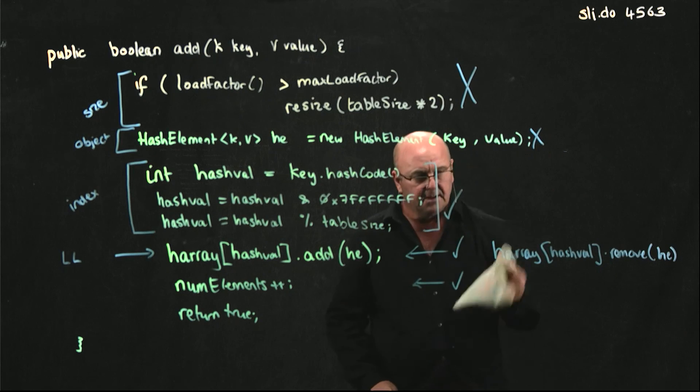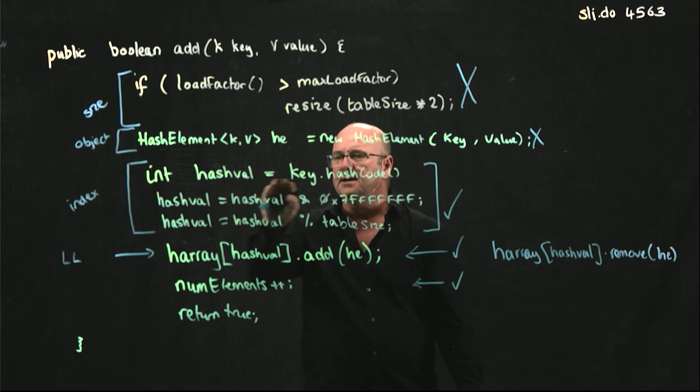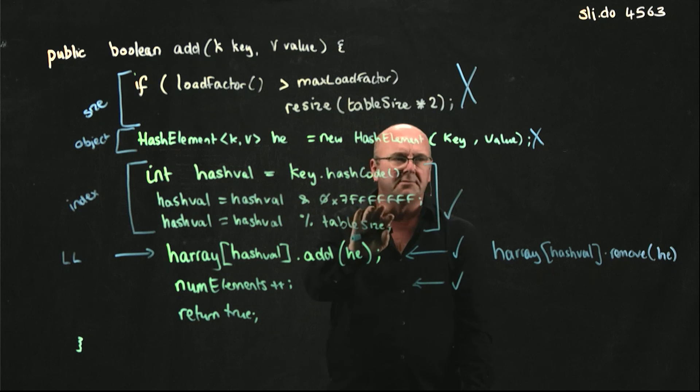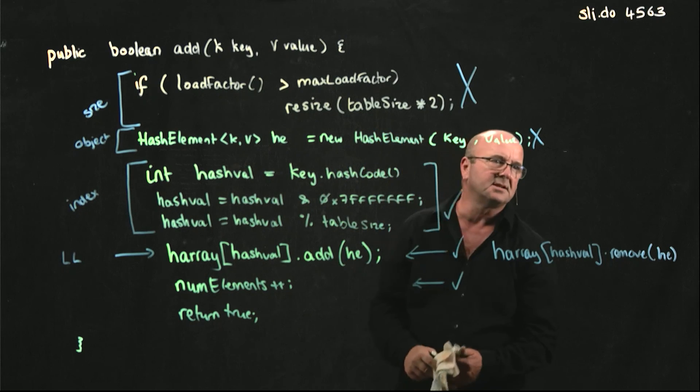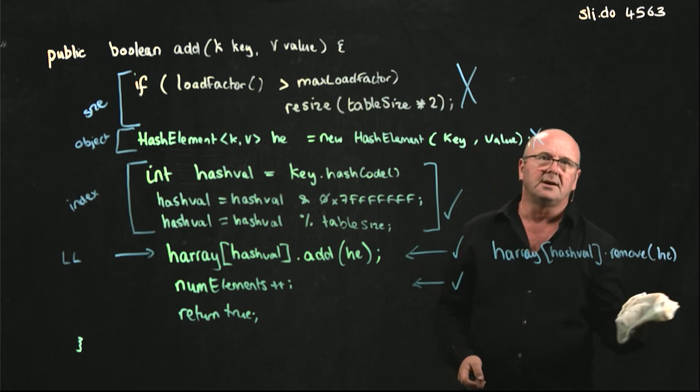So this key here, where we get the hash code from the key, where we make it positive, and we mod it on the table size, is the key that we'll see all the way through in our hash.